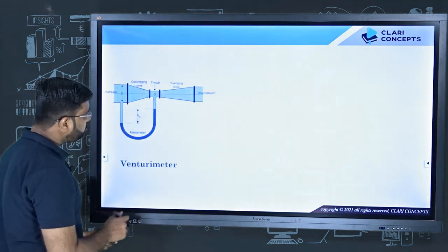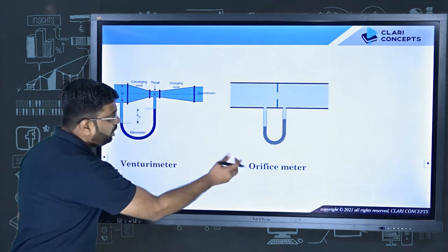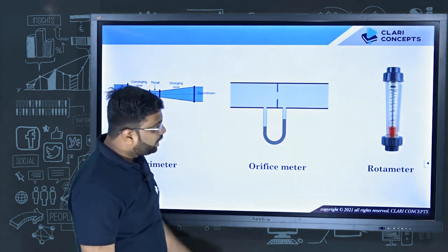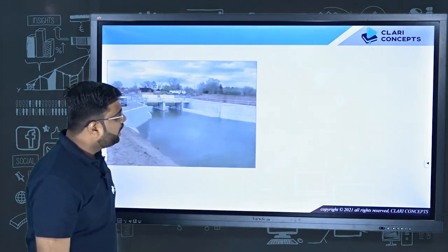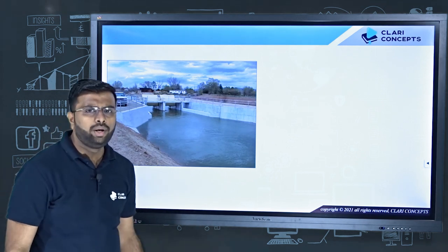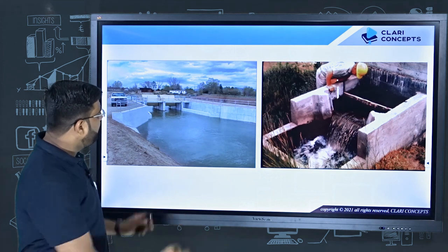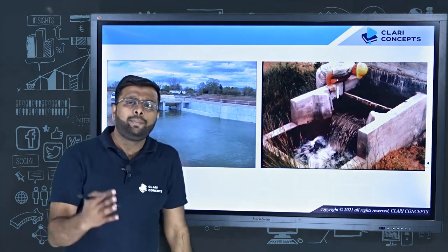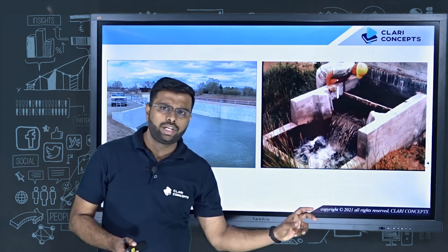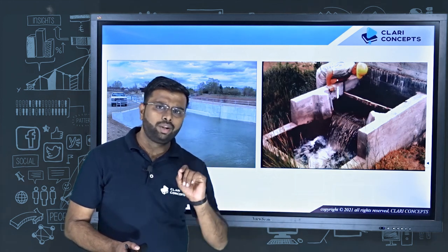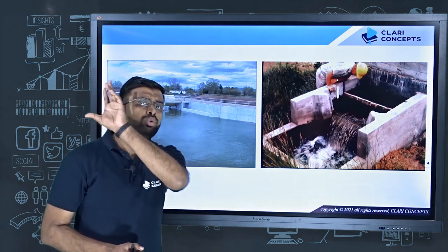We have a device for it — we have a venturimeter for that. We can use a venturimeter to measure the flow rate of fluid in a pipe. You can also use an orifice meter, because both are used to measure flow rate when fluid is flowing through a closed pipe.